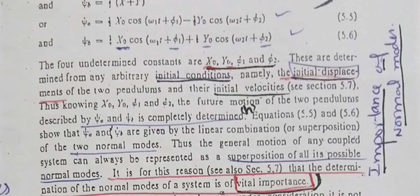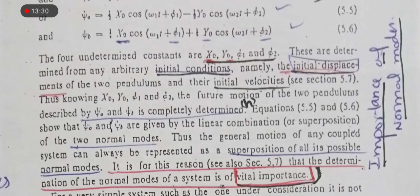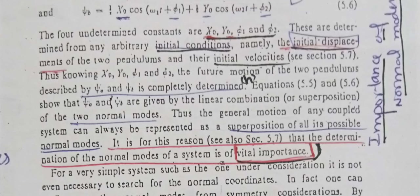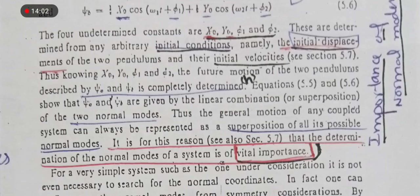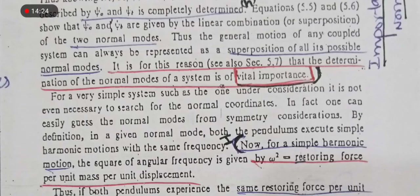اب ہم normal modes کی importance بتائیں گے۔ Equations 5.5 and 5.6 show that psi_a and psi_b are given by the linear combination of two normal modes x and y۔ This means that the general motion of any coupled system can always be represented as a superposition of all of its possible normal modes۔ It is for this reason that the determination of normal modes of the system is of vital importance — یہ ہمارے پاس normal modes کی بہت زیادہ importance show کرتی ہے۔